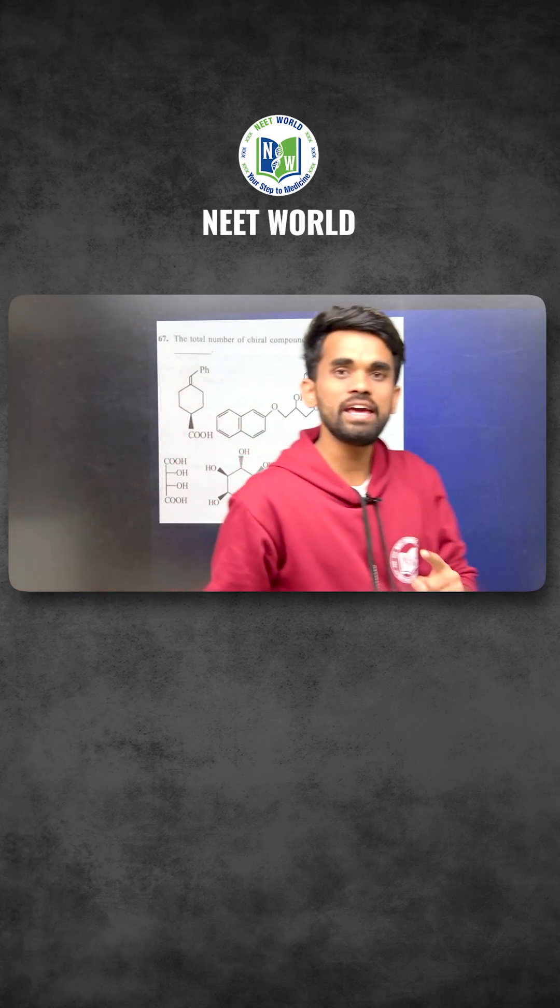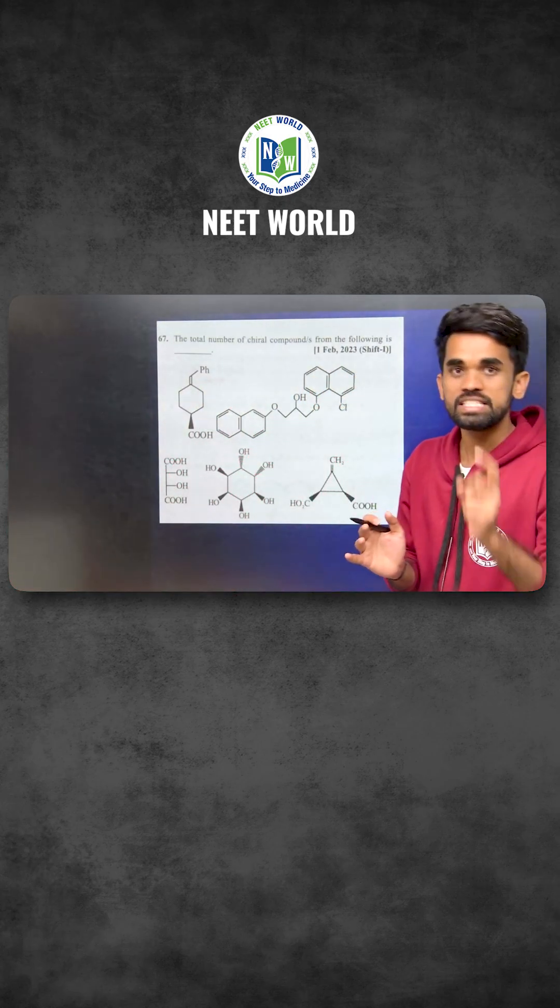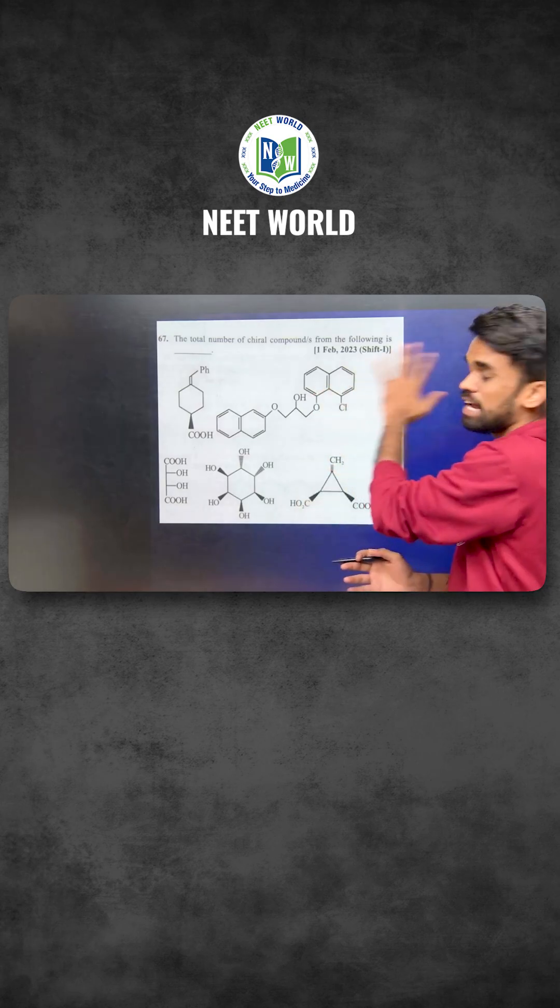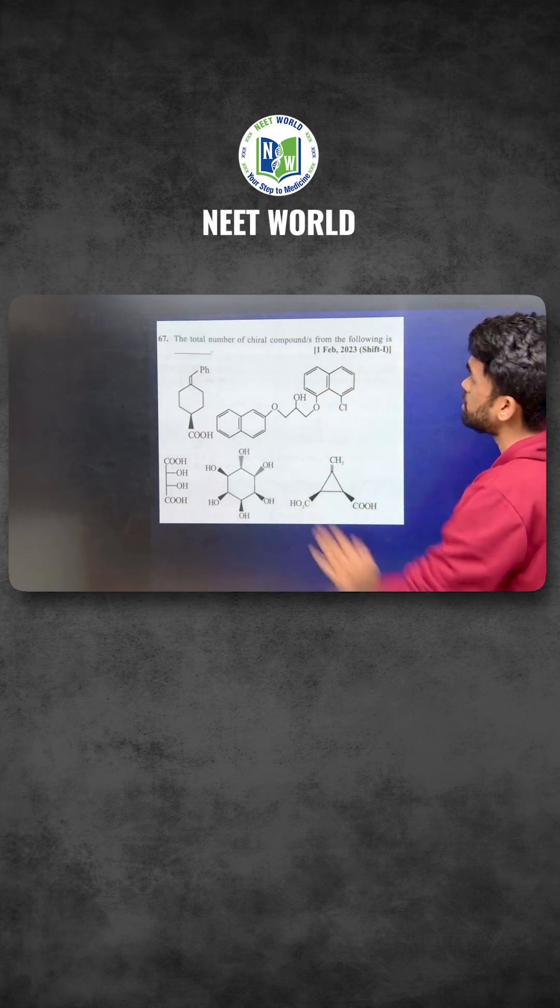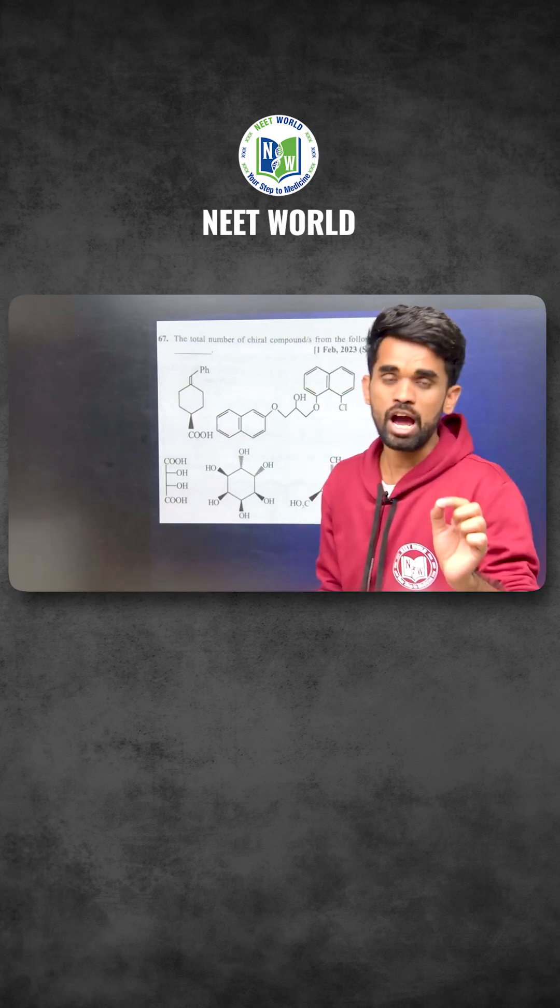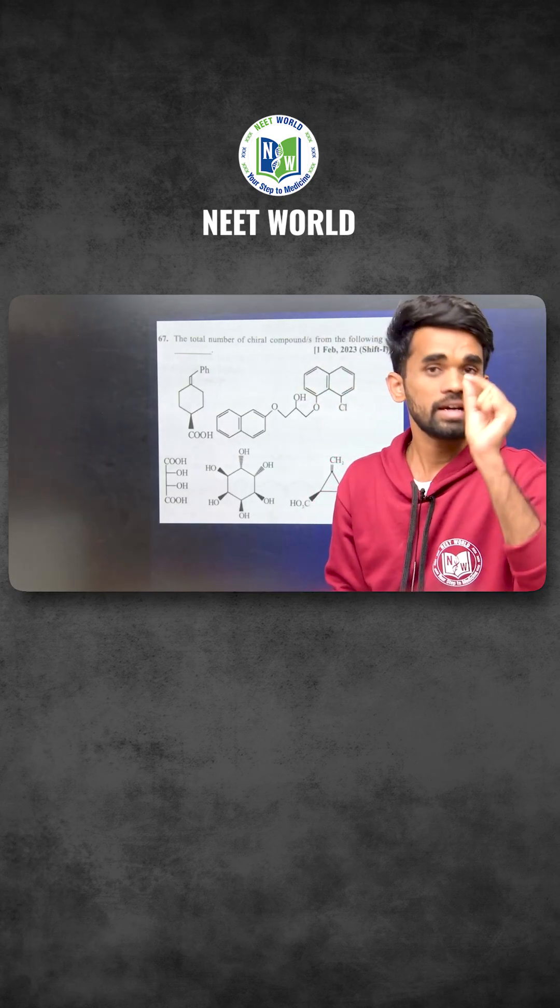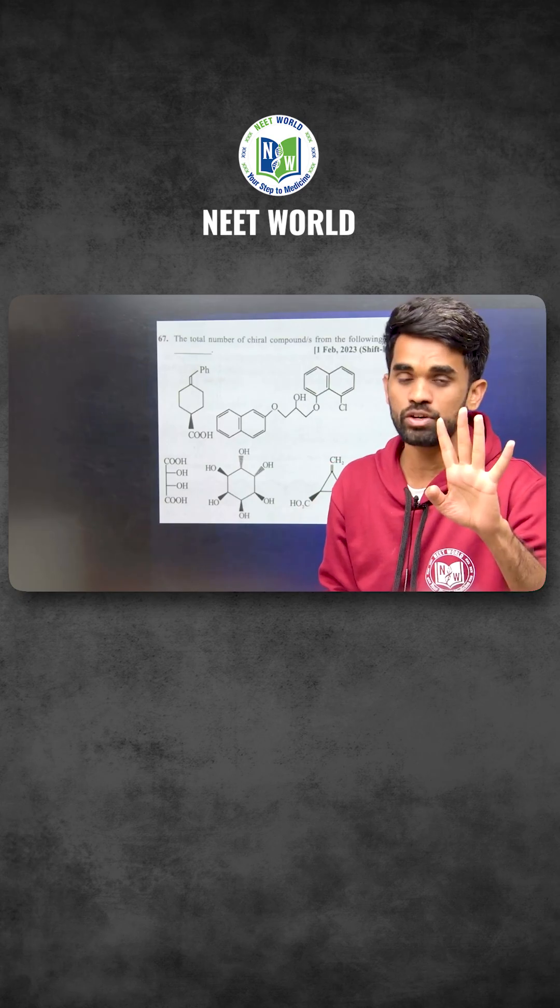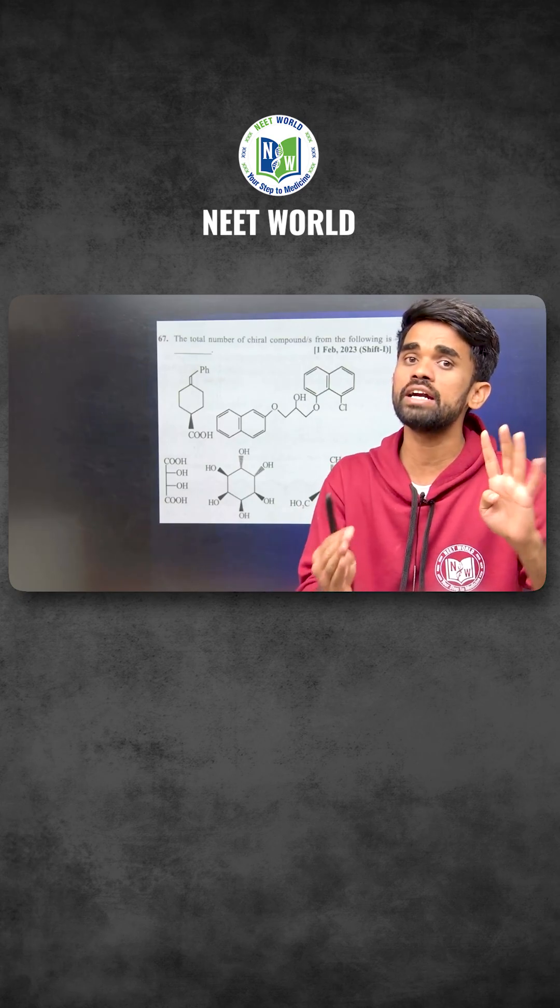Identifying chiral compounds is very easy, just follow these techniques so that you can answer this kind of question. Look at the question: total number of chiral compounds from the following. In order to show optical activity, a compound should either contain a chiral center, carbon with four different groups, or else it should not contain any plane of symmetry or center of symmetry.